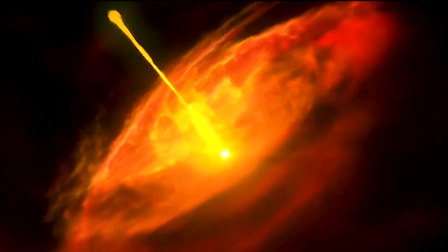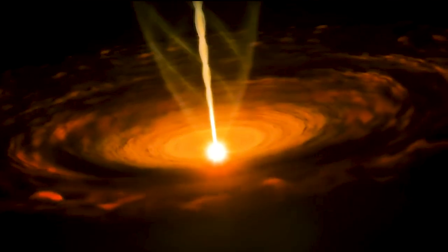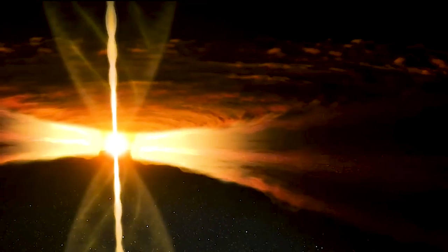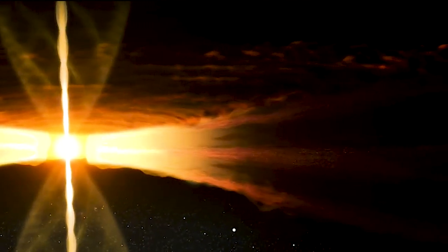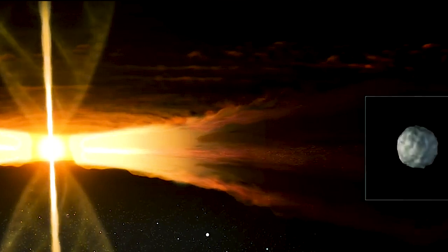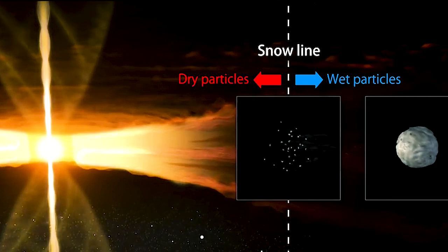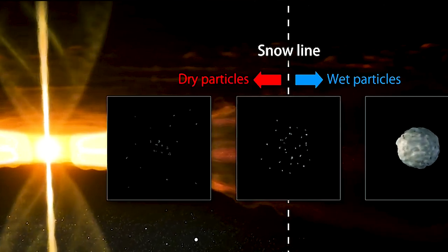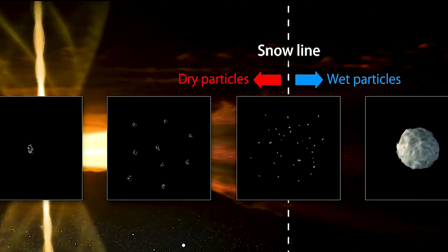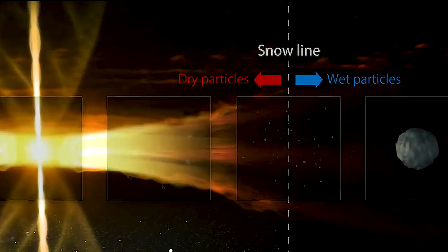Our solar system is a part of the Milky Way galaxy. Within the solar system, material circulation had been progressing. The water component from the outer region evaporated to make materials dry. Through this process, particles were zonally distributed depending on their water content.